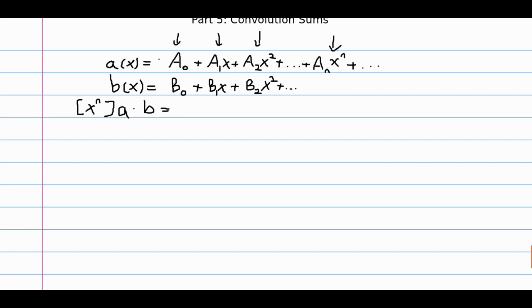So we have to have one of these first n plus 1 terms. Let's say we choose a sub 0. Then we have to match it with b sub n times x to the n, because 0 plus n is n. What if we picked a sub 1 times x? Then we have to pick b sub n minus 1 times x to the n minus 1, because 1 plus n minus 1 is n. We're choosing the ones that add up to n. We go across in diagonal fashion until we get to a sub n times x to the n, where we have to pick b sub 0, because 0 plus n is n.